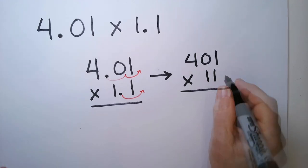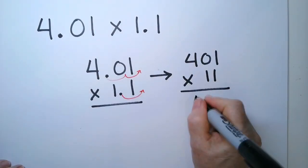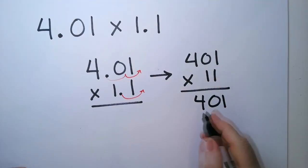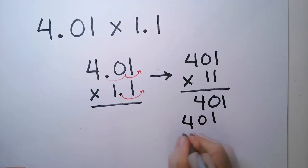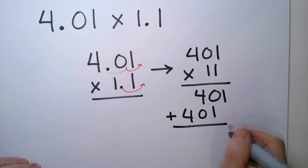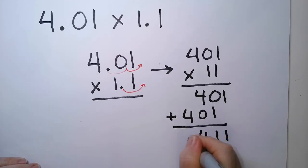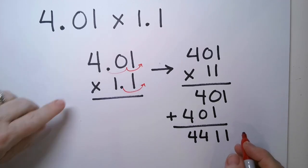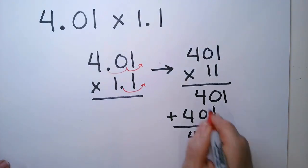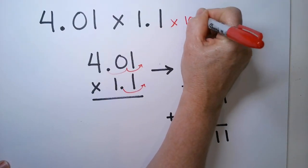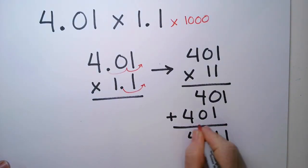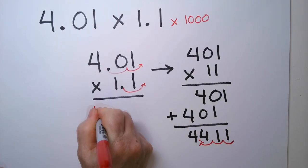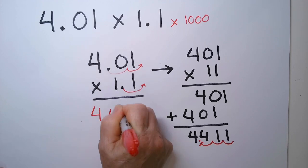So 411. So 1 times 401 is 401. And then 1 times 401 is 401 again. We're going to add those numbers together. So I have a 1, 1, 4, 4. And then I'm going to put in my decimal point. We had 3 hops out, which means we were multiplying this by 1,000. Now we're going to divide this number by 1,000. Go 1, 2, 3. Decimal point's there. The final answer is 4.411.